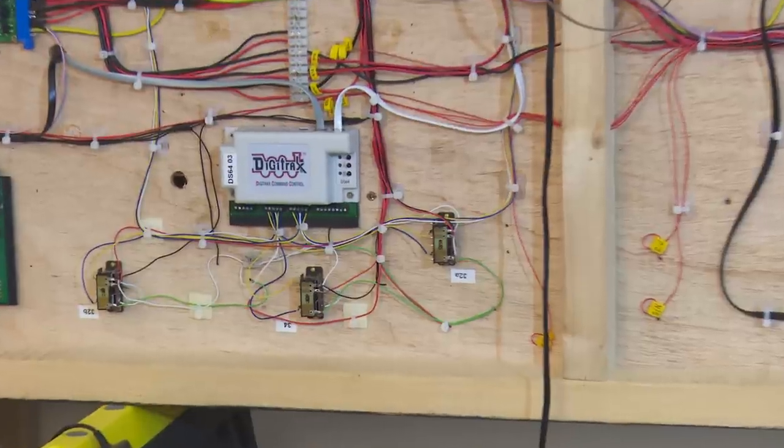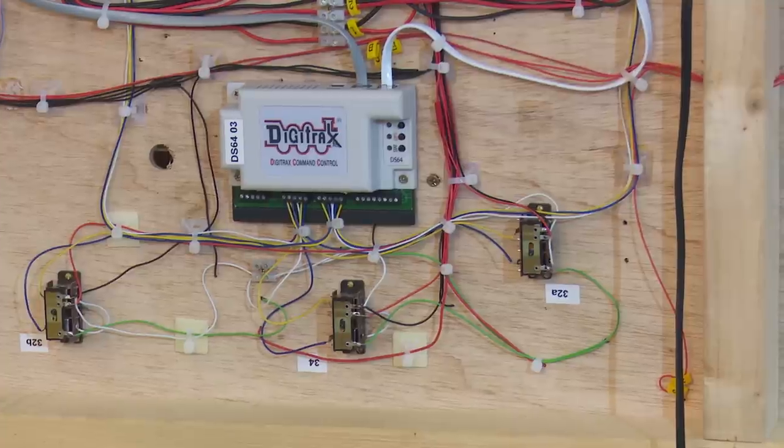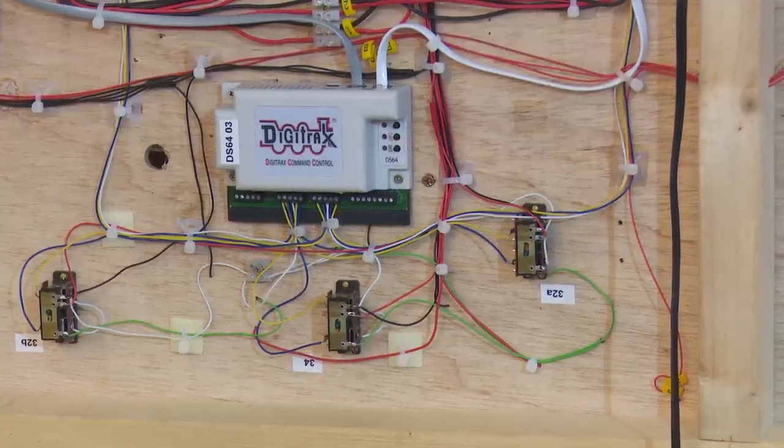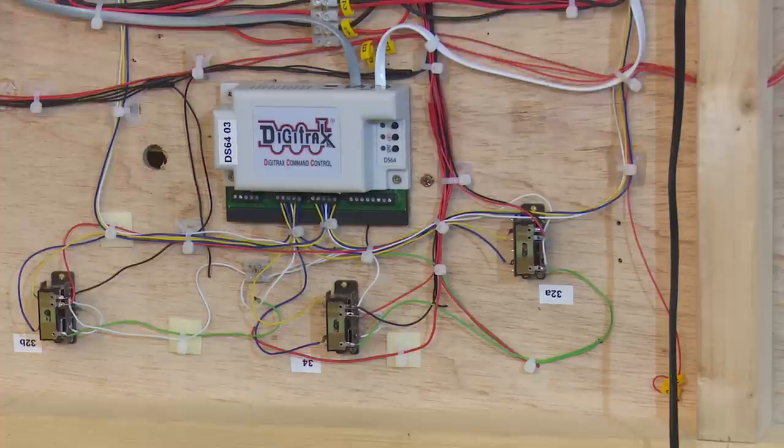Each DS64 controls up to four points and they can be either slow action or solenoid type points but the advantage of using this is that then all the points can be controlled from the handset.